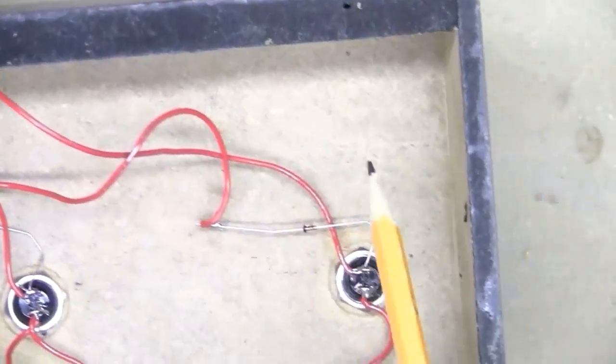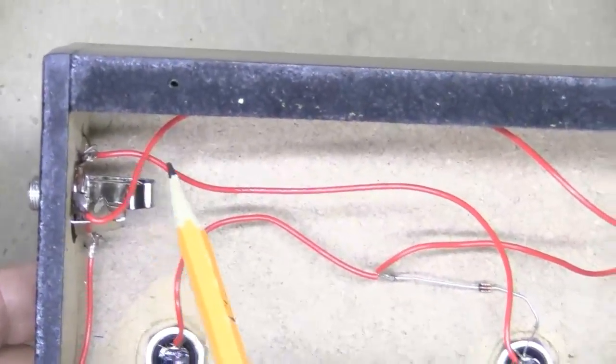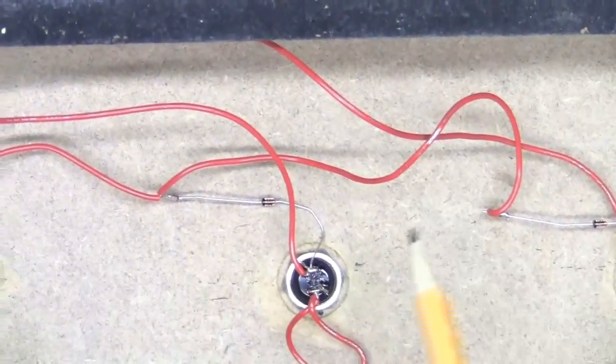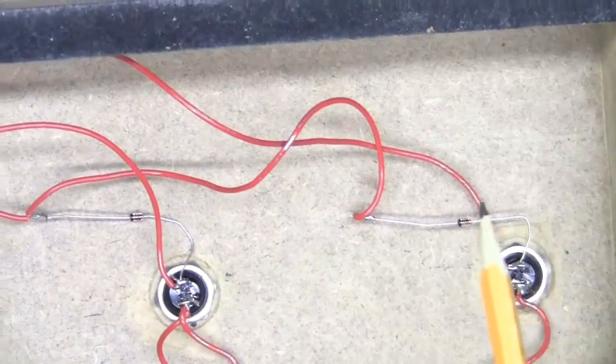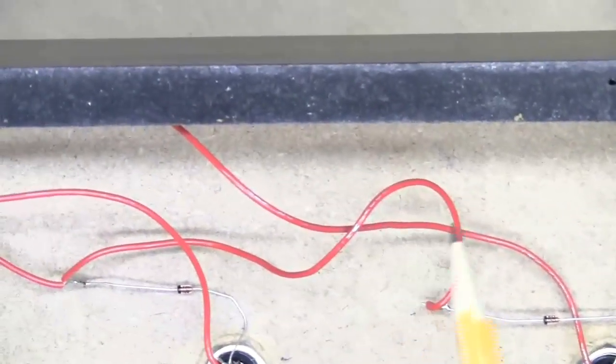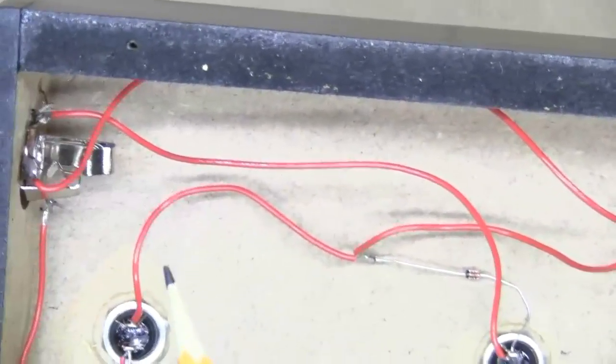We have a wire from the tip going directly to switch one. We have a wire from the ring going directly to switch two. And then we have the diode with its marker there connected by a wire to switch three.